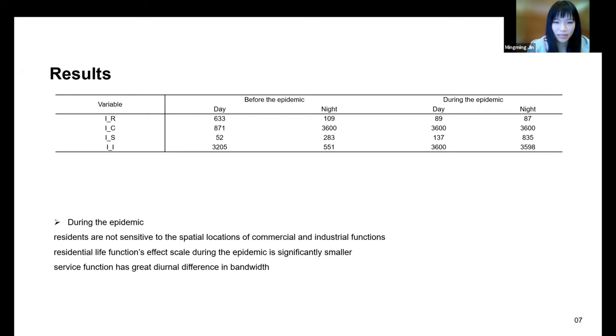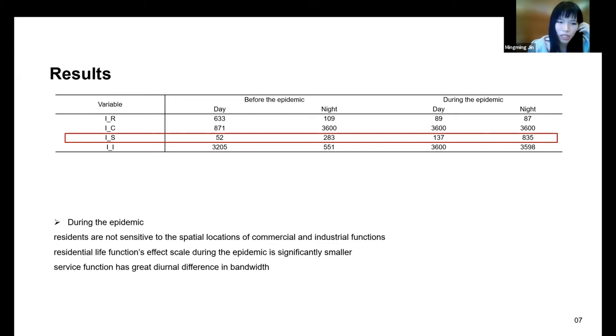The function bandwidth of service function has a significant difference between day and night during the epidemic. That is, there is still significant difference in population distribution between day and night in the service function area. This may be because service function areas still have commuting characteristics during the epidemic. They are the guarantee of the basic operation of the city.